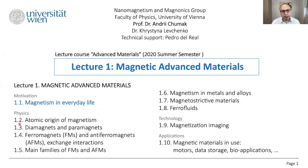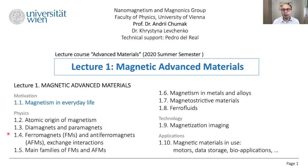After the motivation part we will switch to atomic origin of magnetism, where we will recall some basics of atom physics. The main question is what is the source of magnetic properties, and depending on the response of a solid body to a magnetic field, we define large families of materials: diamagnets, paramagnets, ferromagnets, antiferromagnets. We will also discuss dipolar and exchange interactions which help us understand this behavior.